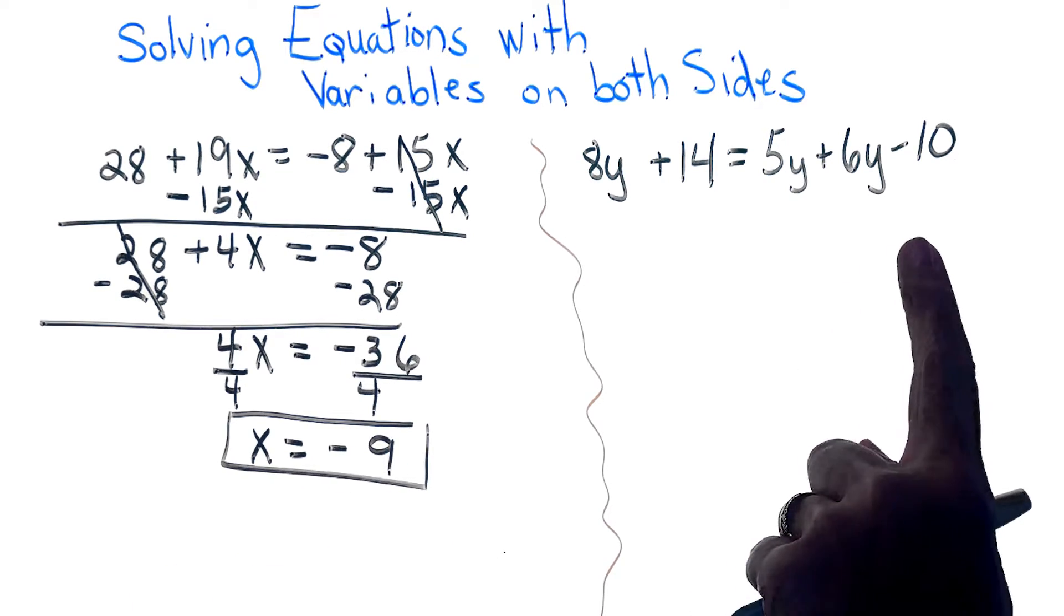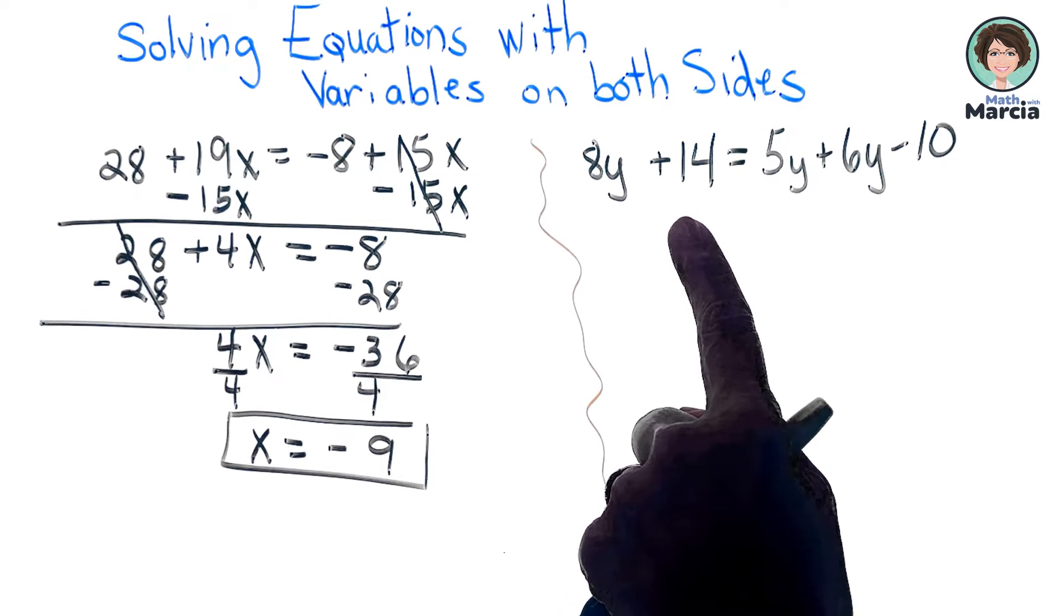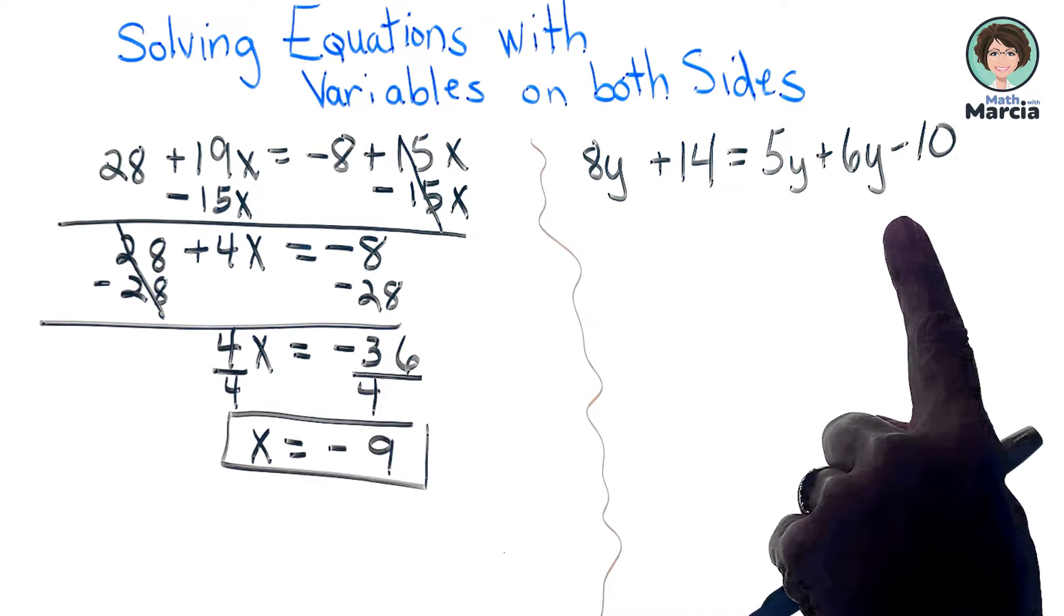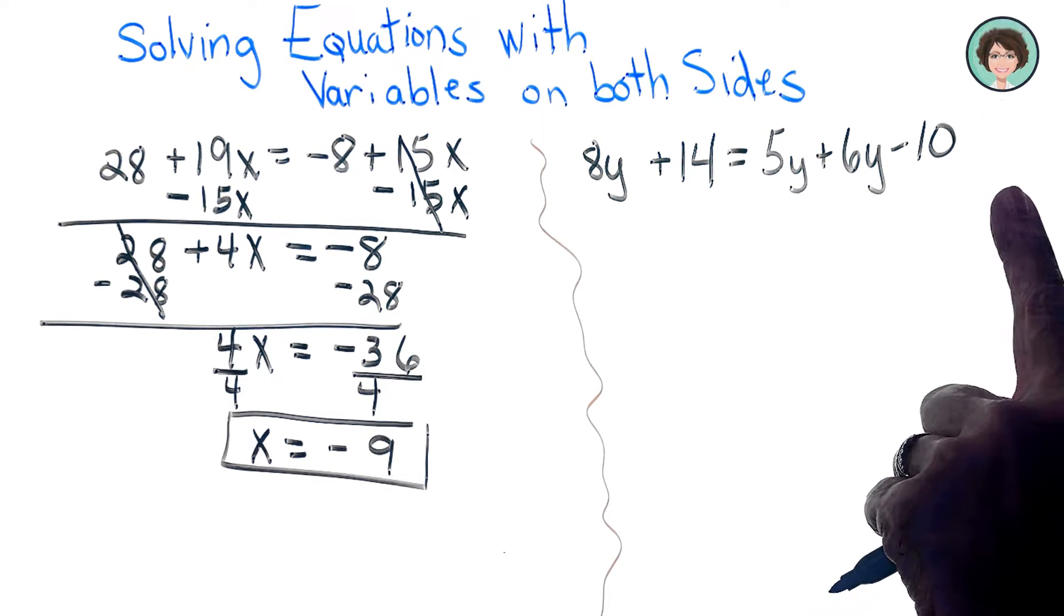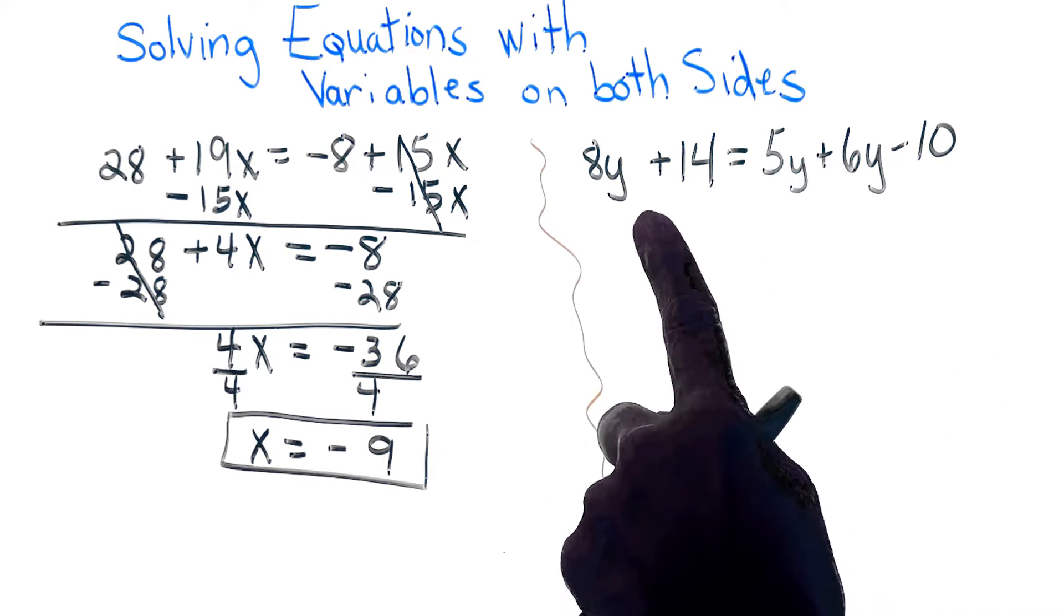Looking at the next problem that we have here, 8y plus 14 equals 5y plus 6y minus 10. Well, I see the left side of the equation, you can't simplify it at all.